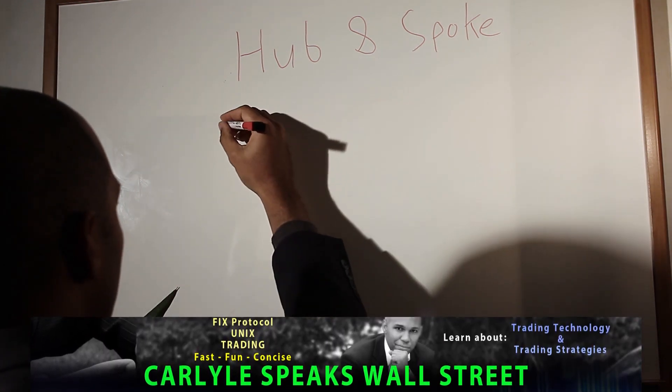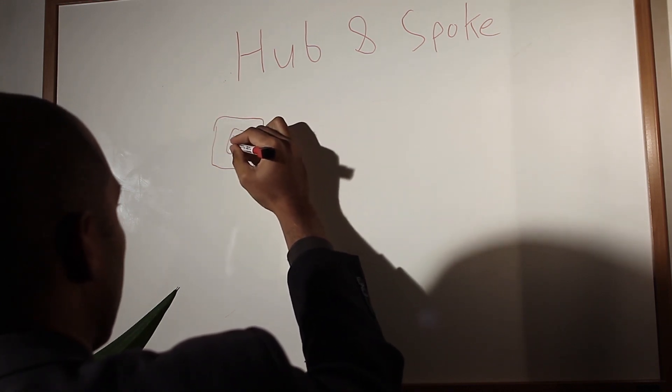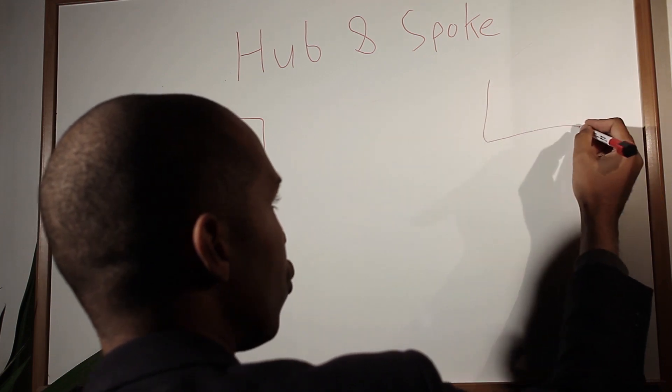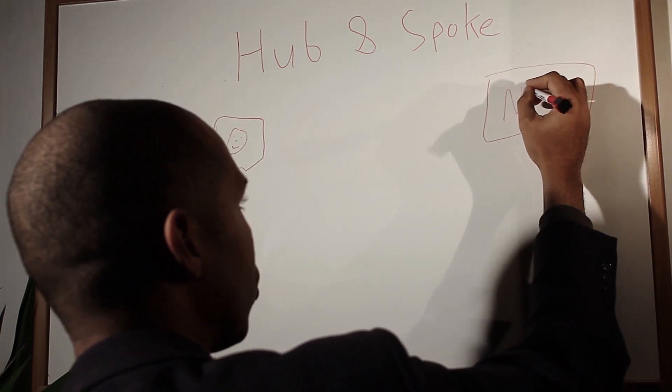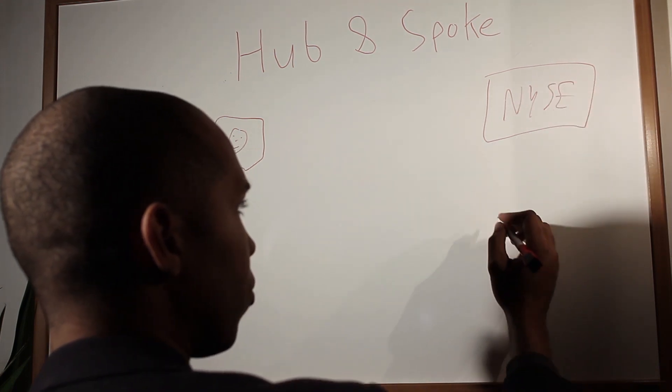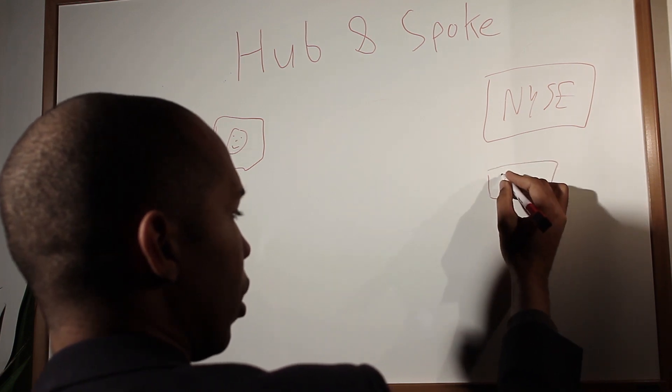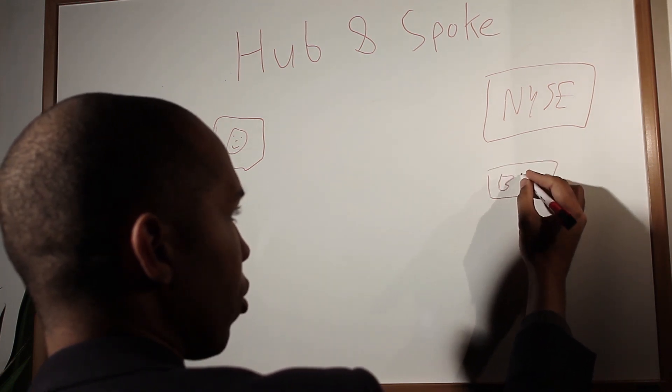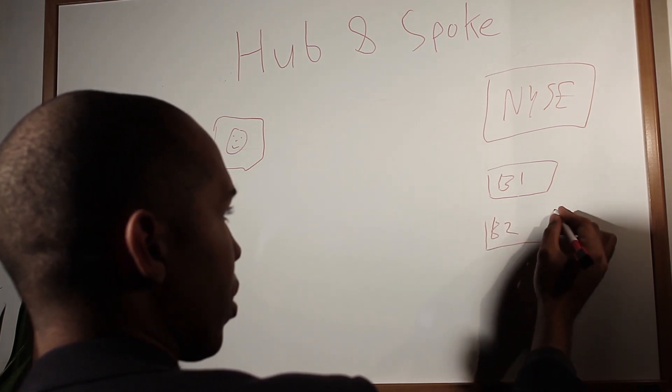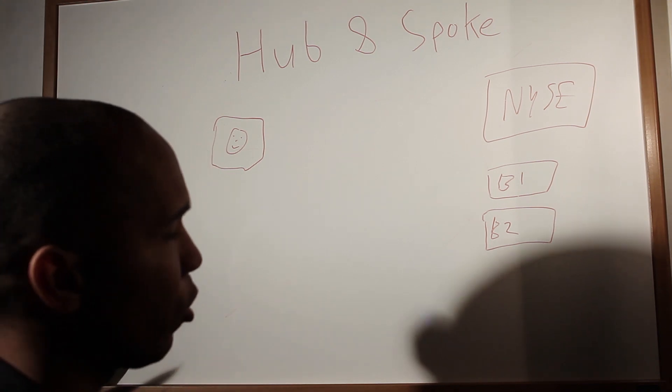So here we have you. You want to start up some kind of a trading firm or whatever and you want to send out orders to places like the New York Stock Exchange, and you might want to send out to different brokers. Let's just call it B for broker. So broker one, broker two.